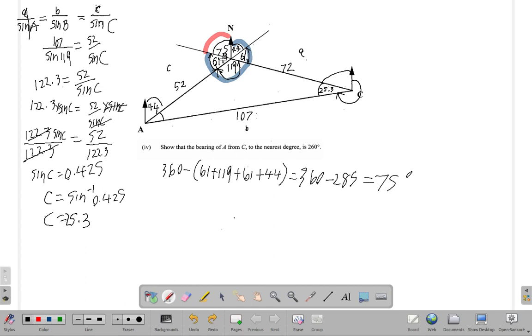This is 75 degrees. What else is 75? This, also 75. Now, you see this 75 plus 25.3. 75 plus 25.3 equals 100. I'm getting a little messed up here. Let me redo this. This is 100.3.